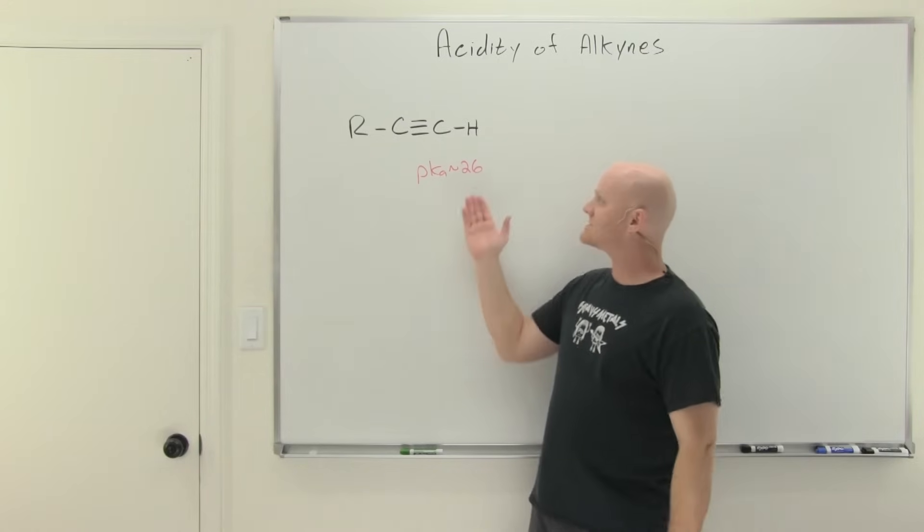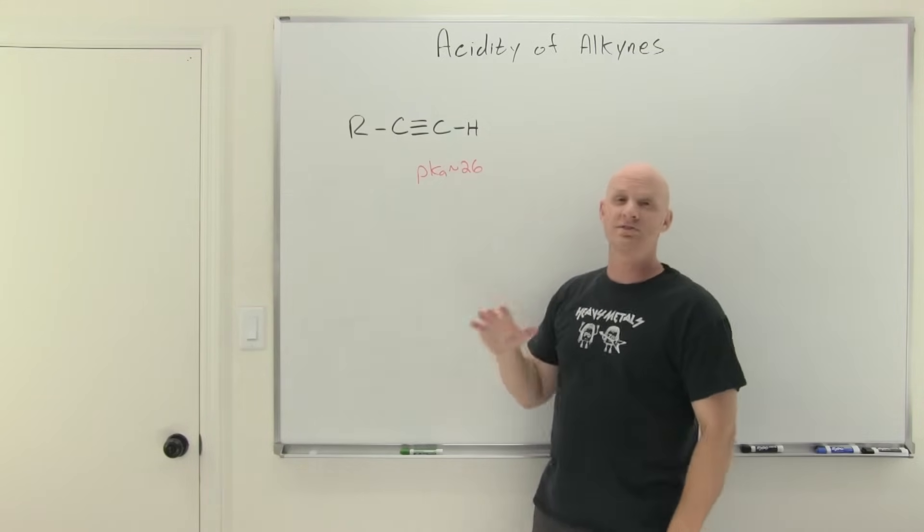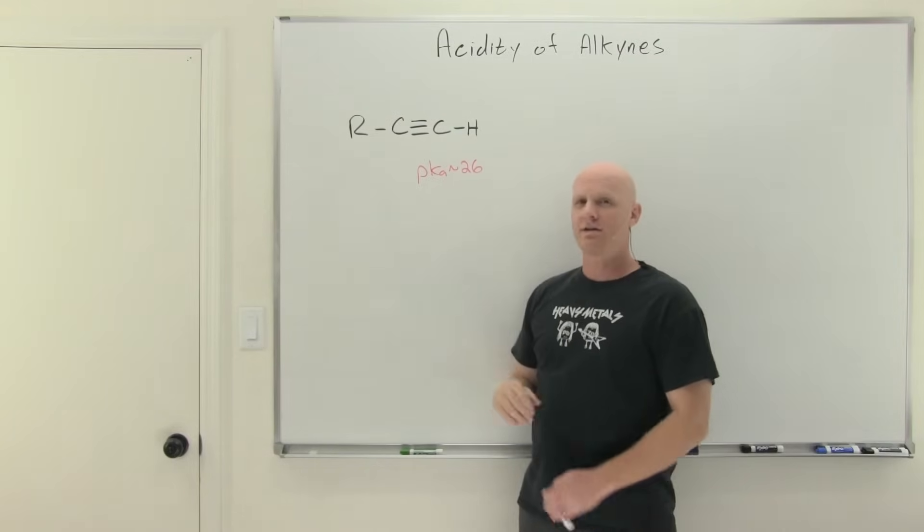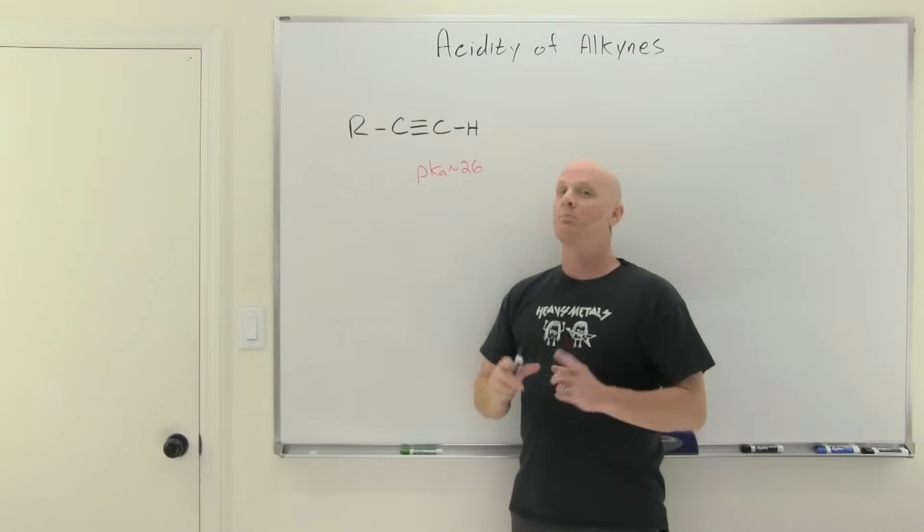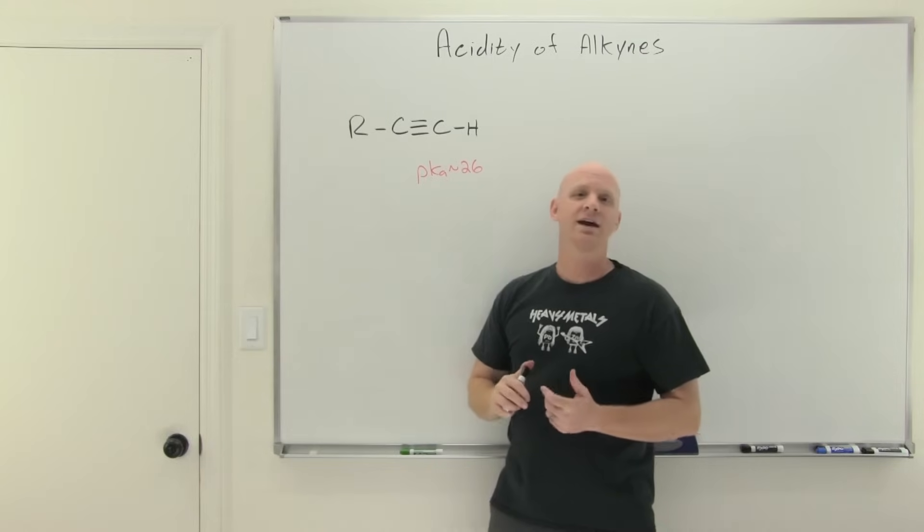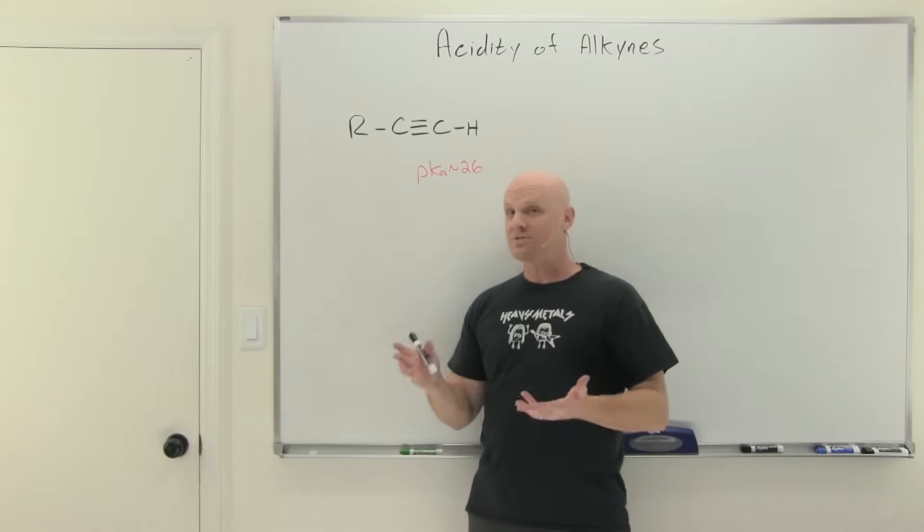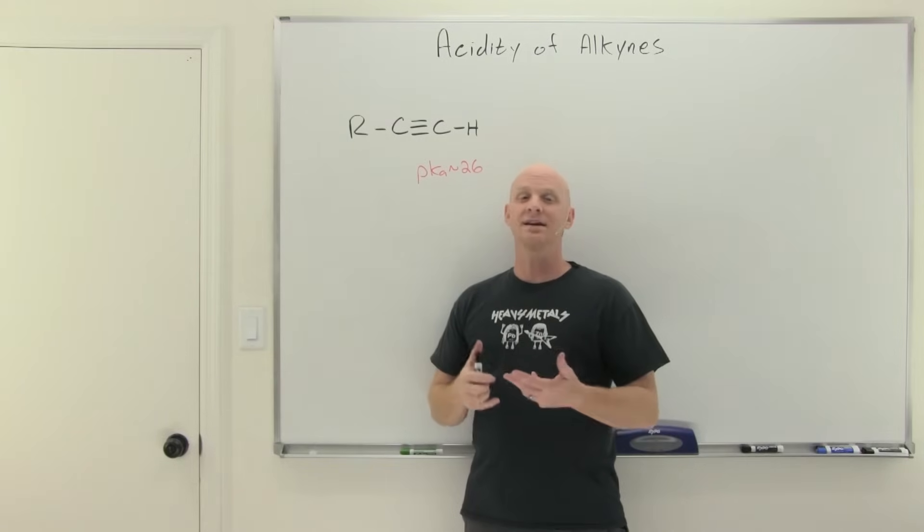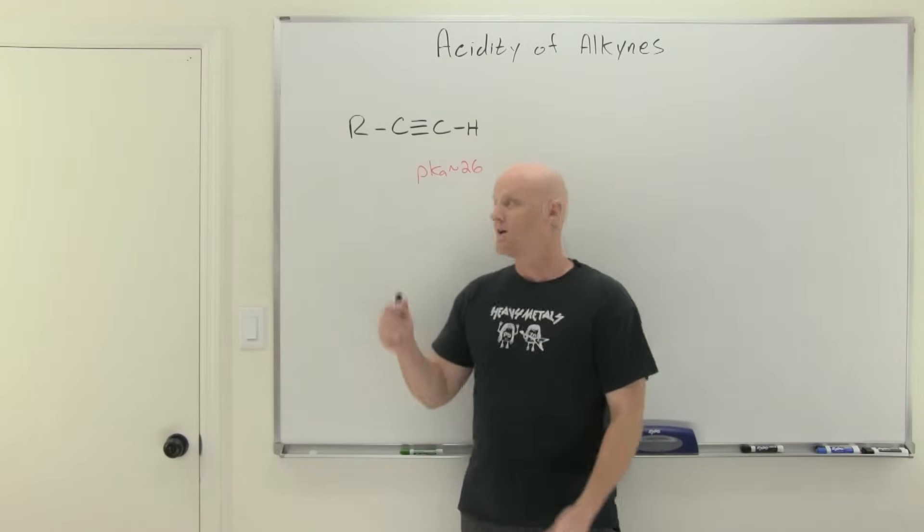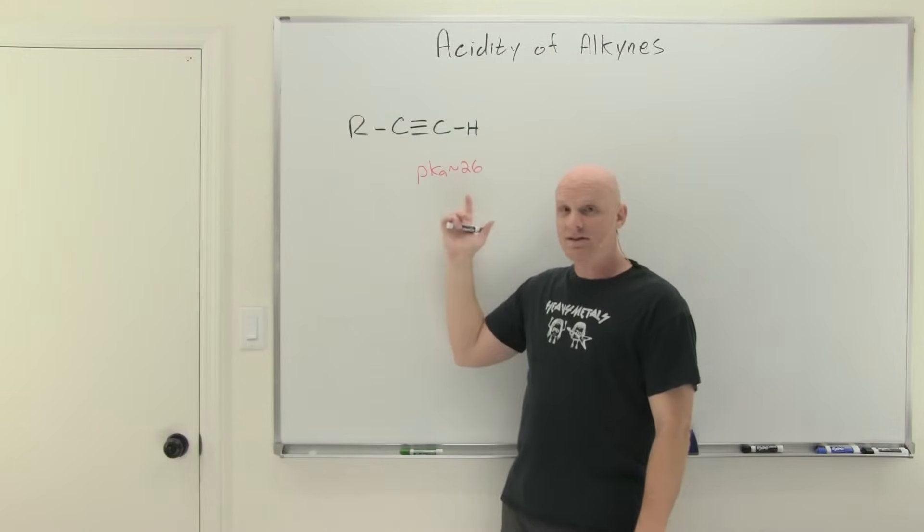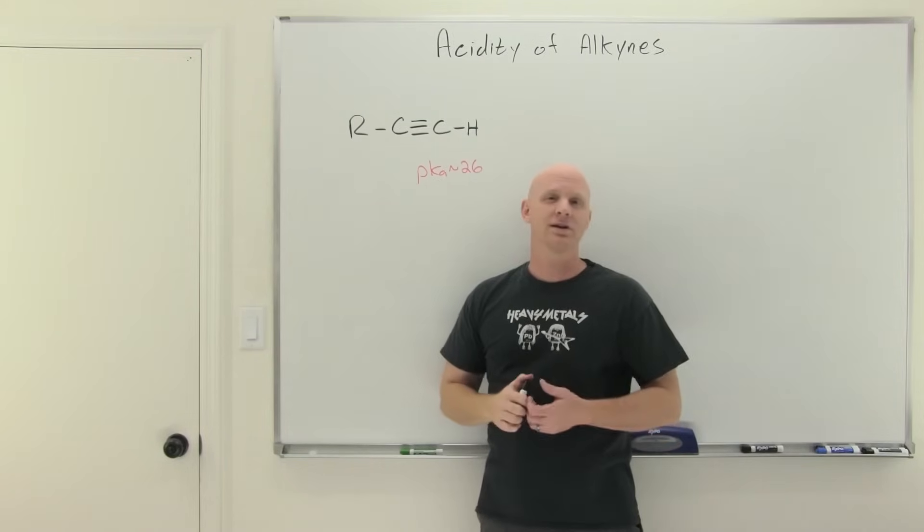We learned back in the chapter on acid bases that a terminal alkyne has a pKa in the 25 to 26 range and so in this case that means it's actually not very acidic. But it's significantly more acidic than an alkane or an alkene. So for an alkane your pKa is in the 50 range. For an alkene your pKa is in the 44 range. So this at pKa of 26, much lower, makes it significantly more acidic than an alkane or alkene.